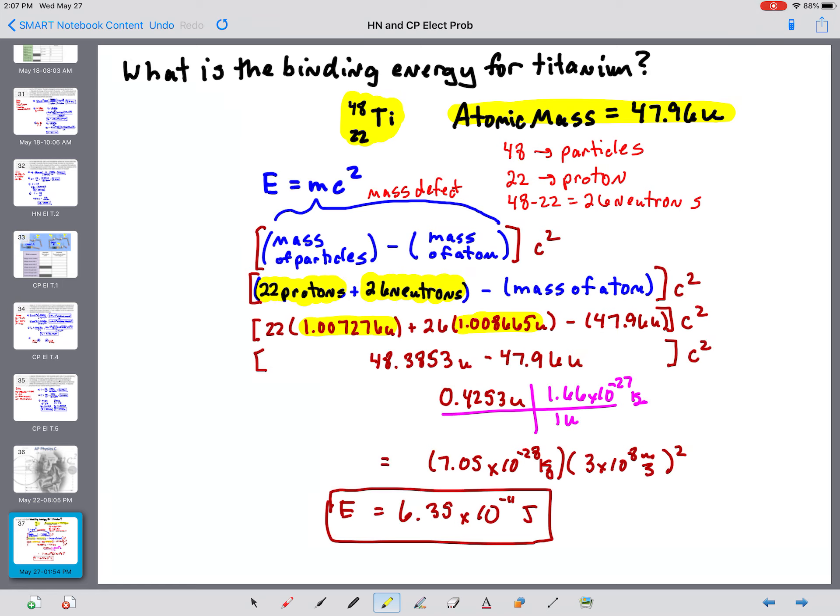So 22 of the proton, 26 of the neutron. And then from that total mass of all the particles, you're subtracting the mass of the atom, which is right there, and that came from the periodic table.